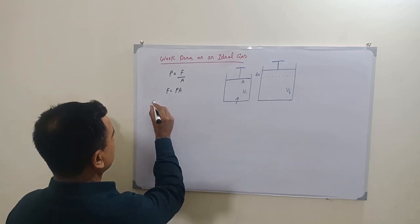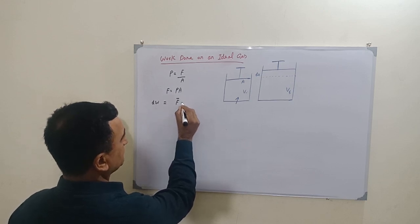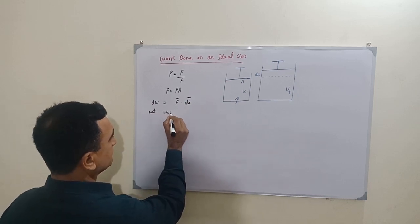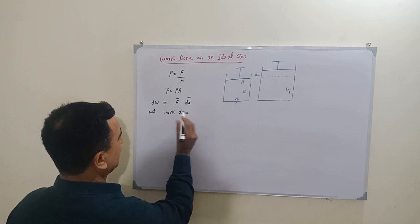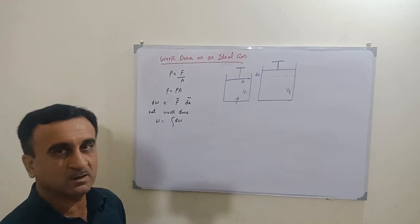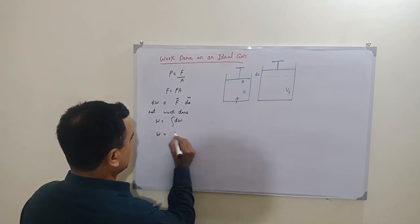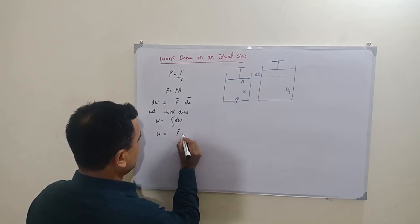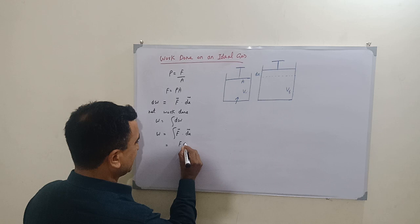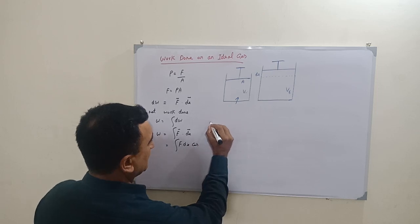The work done on the ideal gas through small displacement dx is dW = F · dx. The net work done on the ideal gas is W = ∫dW, so W = ∫F · dx = ∫F dx cos(θ). In this case, theta is equal to 180 degrees.